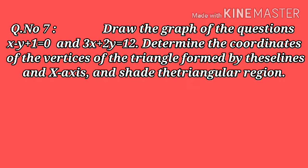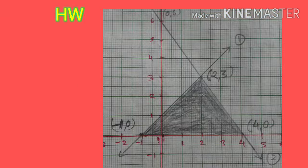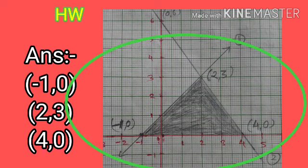Question number 7 is the last question of exercise 3.2: Draw the graph of x − y + 1 = 0 and 3x + 2y = 12, and determine the coordinates of the vertices of the triangle formed by these lines and the x-axis, then shade the triangular region. This is homework — try it yourself. The vertices of the triangle are (−1, 0), (2, 3), and (4, 0). Thank you for watching this video.